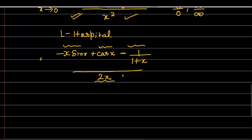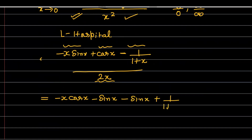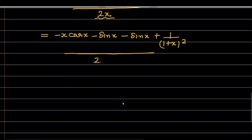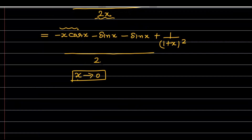Let's differentiate again. Differentiating cos(x) − x·sin(x) gives −sin(x) − (sin(x) + x·cos(x)) = −2·sin(x) − x·cos(x). Wait — more carefully: differentiating cos(x) gives −sin(x), and differentiating −x·sin(x) gives −sin(x) − x·cos(x). Differentiating −1/(1+x) gives 1/(1+x)². The denominator 2x differentiates to 2. Now substituting x = 0: the sin(0) = 0, x·cos(0) = 0, so those terms vanish, and 1/(1+0)² = 1 remains. So the answer is 1/2.